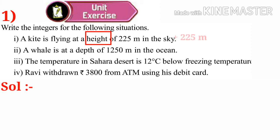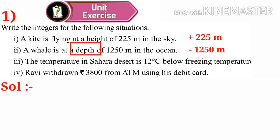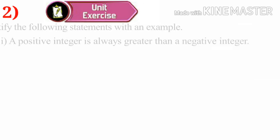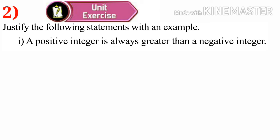A whale is at a depth of 1250 meters in the ocean. Depth indicates minus, so minus 1250 meters. The temperature in the Sahara Desert is 12 degrees centigrade below freezing temperature. Below indicates minus, so minus 12 degrees centigrade. Ravi withdrew 3800 rupees from ATM using his debit card. Withdrawn indicates minus, so minus 3800 rupees. Now, second problem: justify the following statements with an example. Number one: a positive integer is always greater than a negative integer.